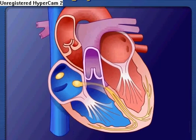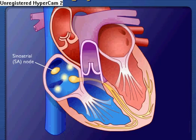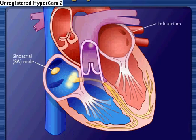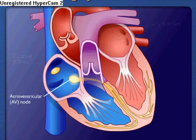Action potentials originate in the sinoatrial node and travel across the wall of the atrium from the sinoatrial node to the atrioventricular node. Action potentials pass slowly through the atrioventricular node to give the atria time to contract.